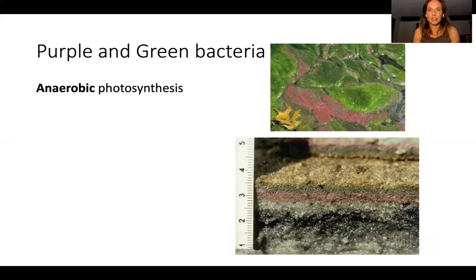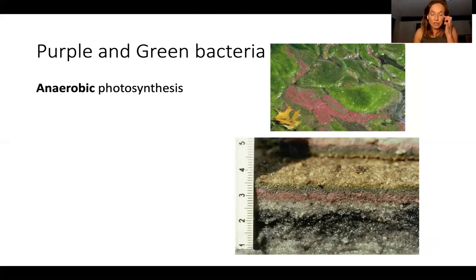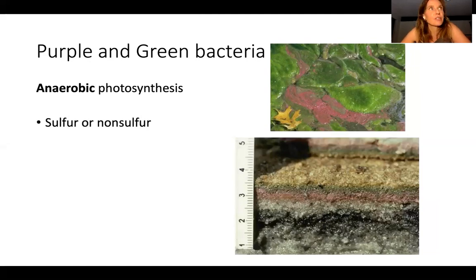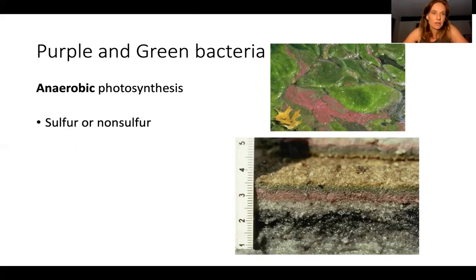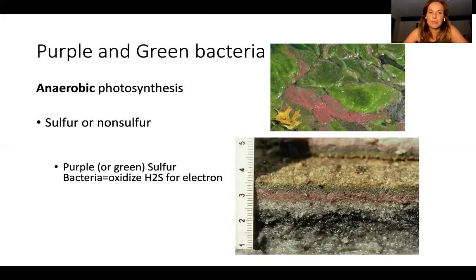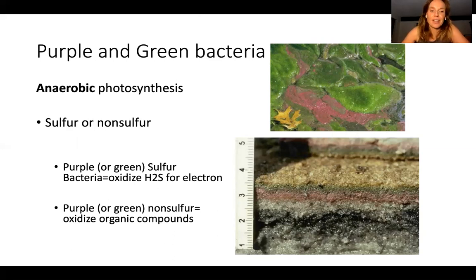Three main groups: cyanobacteria, and purple and green bacteria. The purple and green bacteria are anaerobic photosynthesizers. You can see them quite frequently near the ocean — they form mats on the sand. If you pick up a chunk of sand it might look beige on top, but if you slice through it you'll see layers of green and purple — those are layers of active bacteria at different levels. They like different salinities and different levels of light, and depending on the tide, the order of those layers might change.